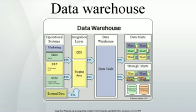The data stored in the warehouse is uploaded from the operational systems, such as marketing, sales, etc., shown in the figure to the right. The data may pass through an operational data store for additional operations before it is used in the DW for reporting. The typical Extract Transform Load based data warehouse uses staging, data integration, and access layers to house its key functions.